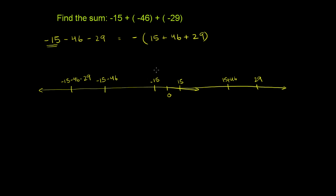These are going to be equivalent. In fact, if you just distribute this negative 1 from the distributive property, this is the same thing as negative 1 times this. Negative 1, you distribute it on all the numbers. It would be negative 1 times 15, which is negative 15. Negative 1 times 46 should be negative 46. Negative 1 times 29 would be negative 29. So these are equivalent.